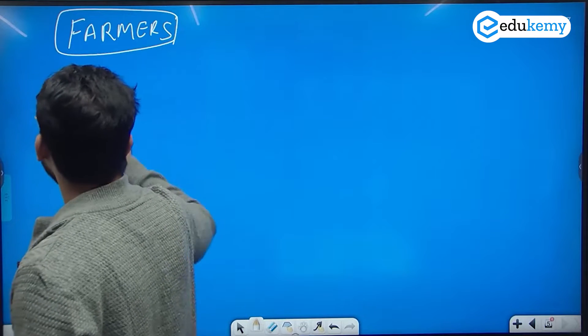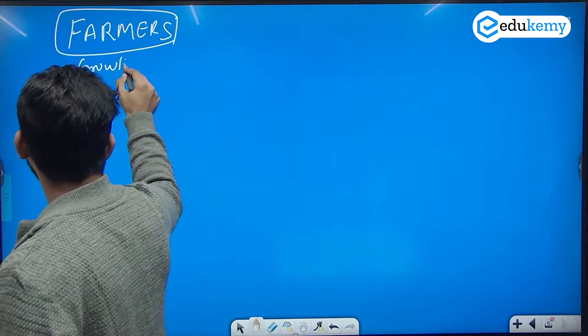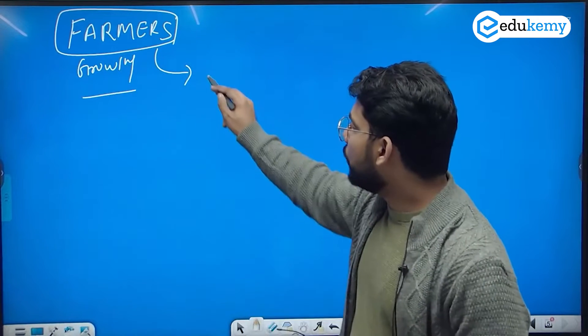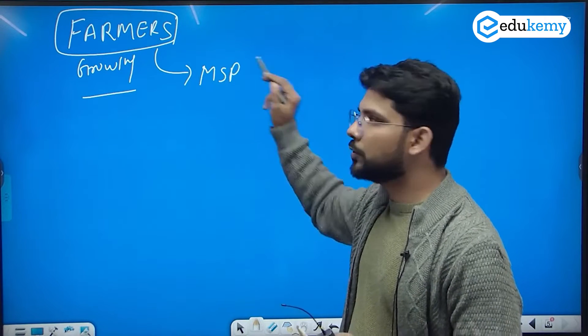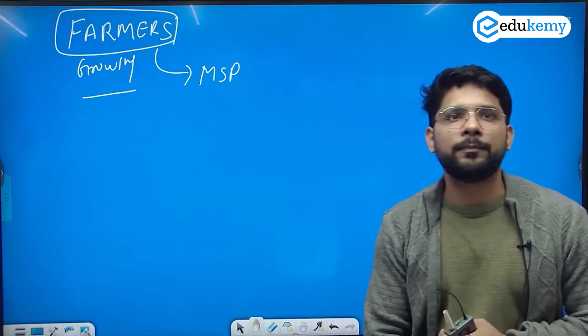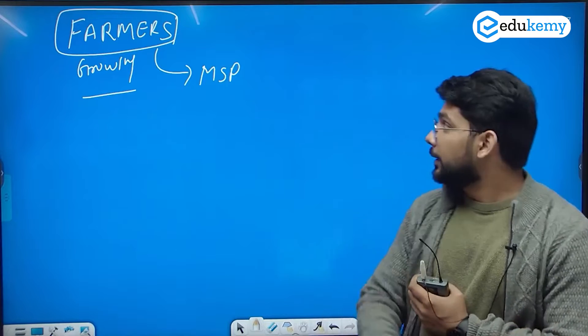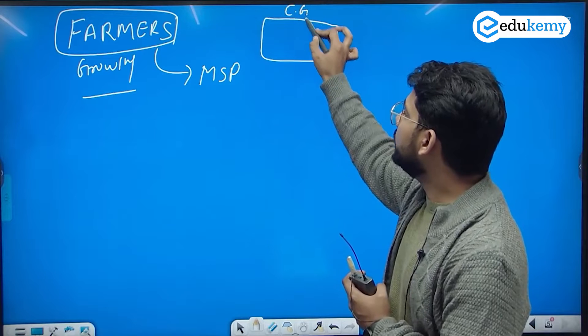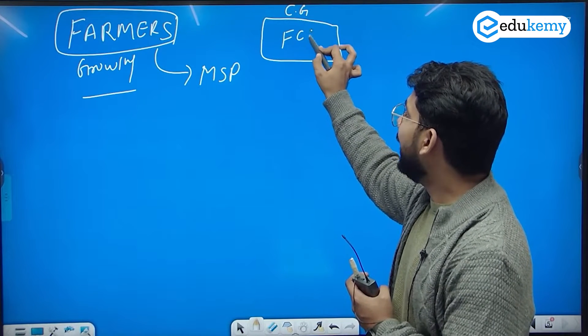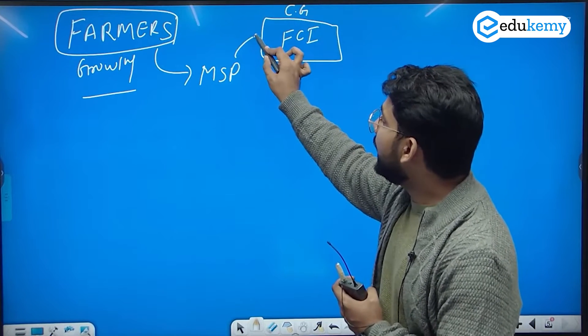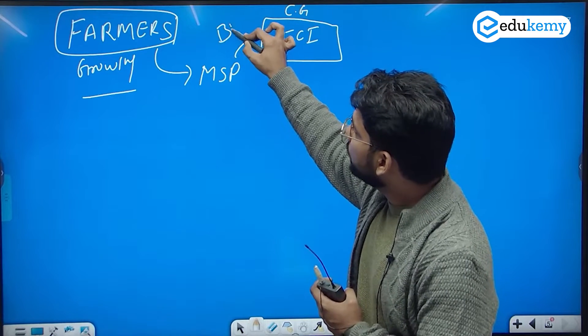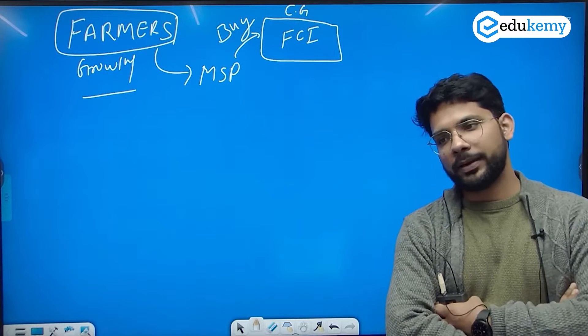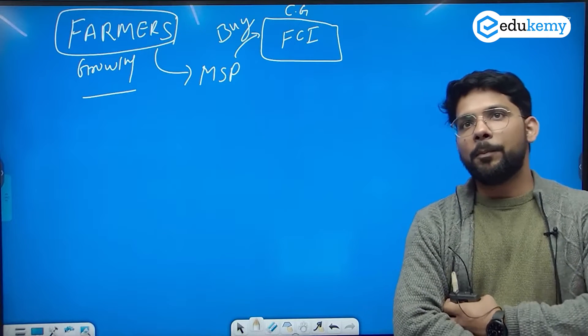Farmers grow the crops, the central government announces the MSP for those crops - Minimum Support Price. Then the central government through FCI buys these grains at MSP, but there is a question mark.